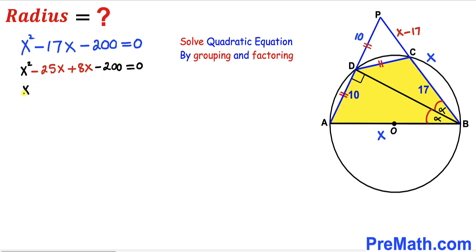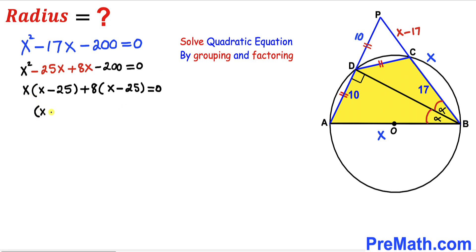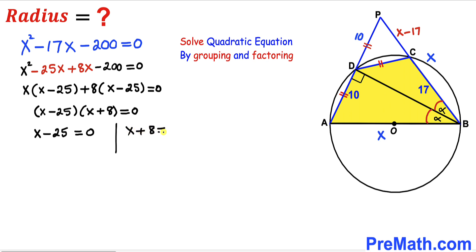Factoring out X from the first pair gives X(X minus 25), and factoring out 8 from the second pair gives 8(X minus 25). So we write (X minus 25)(X plus 8) equals 0, giving two factors: X minus 25 equals 0, and X plus 8 equals 0.